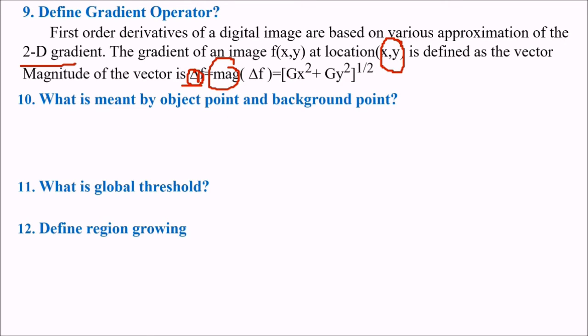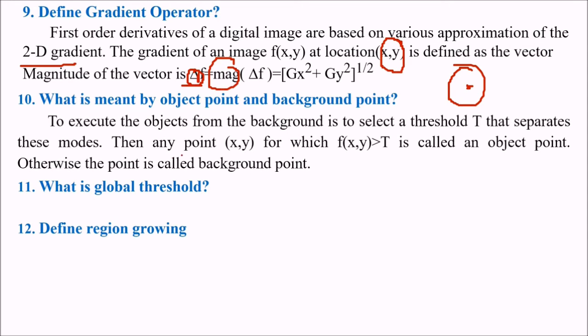What is meant by object point and background point? To delineate the objects from the background is to select a threshold that satisfies certain modes. Any point (x,y) for which f(x,y) is greater than t is called the object point with respect to this threshold. Else the point is called as a background point.